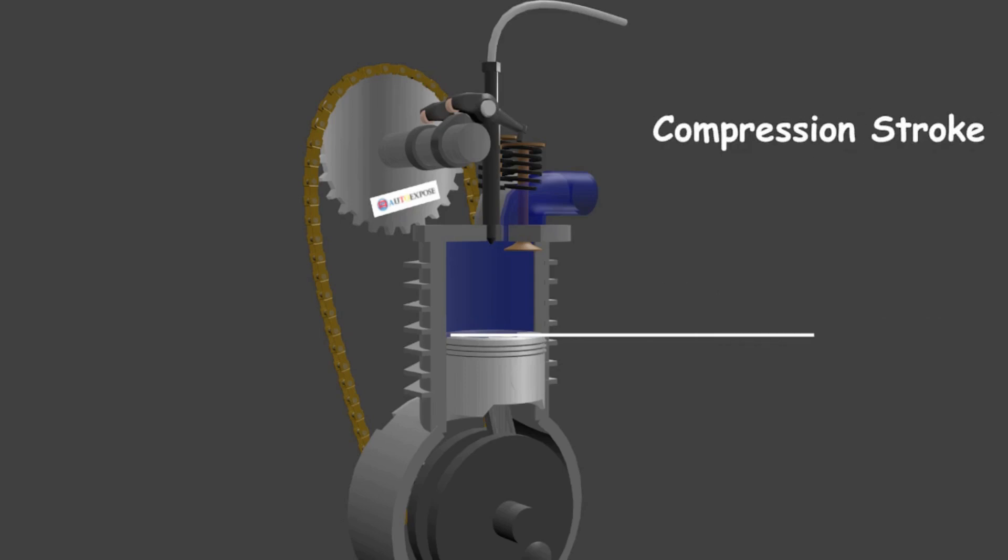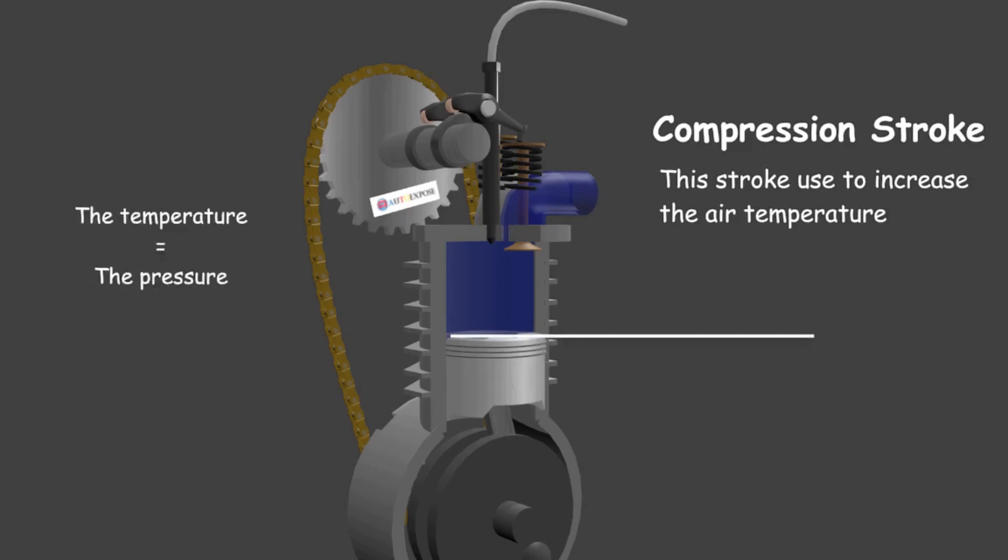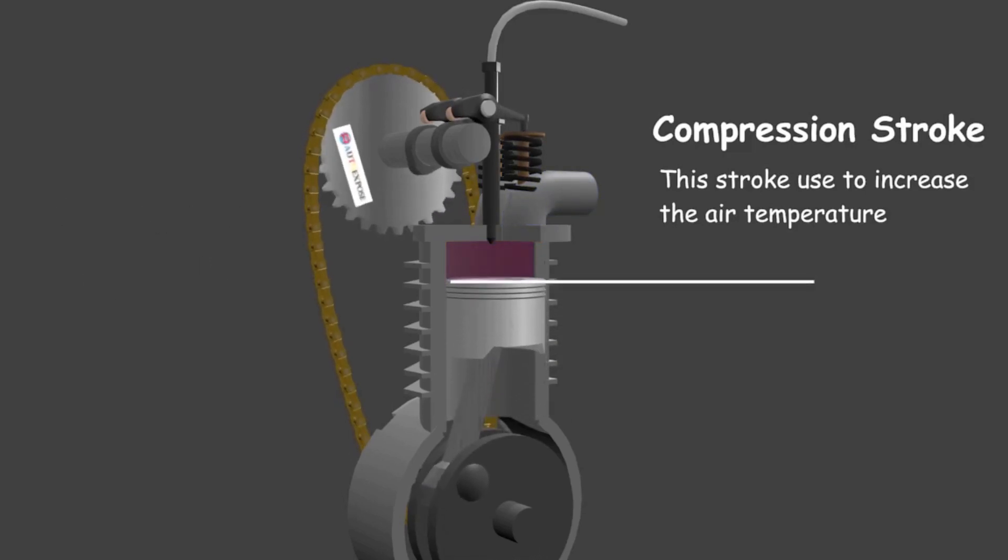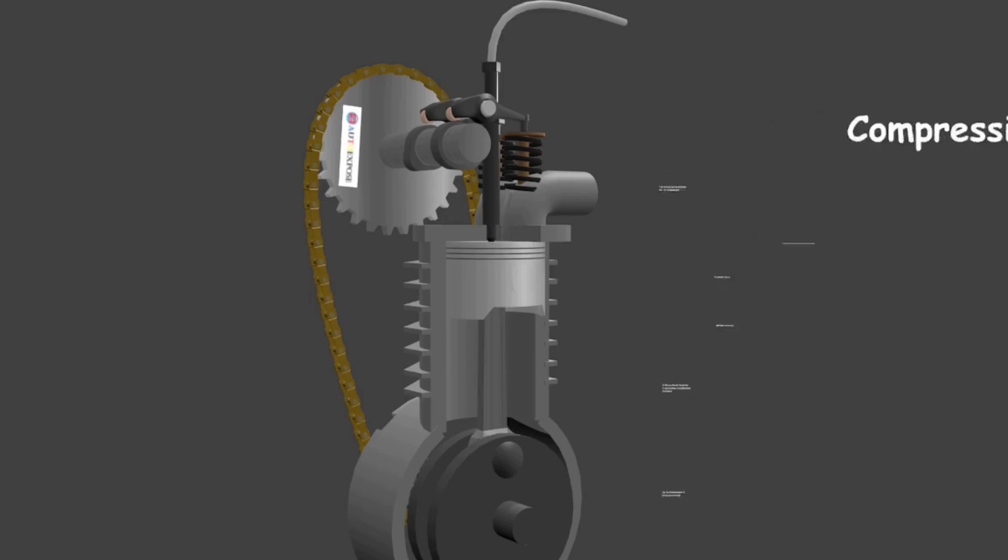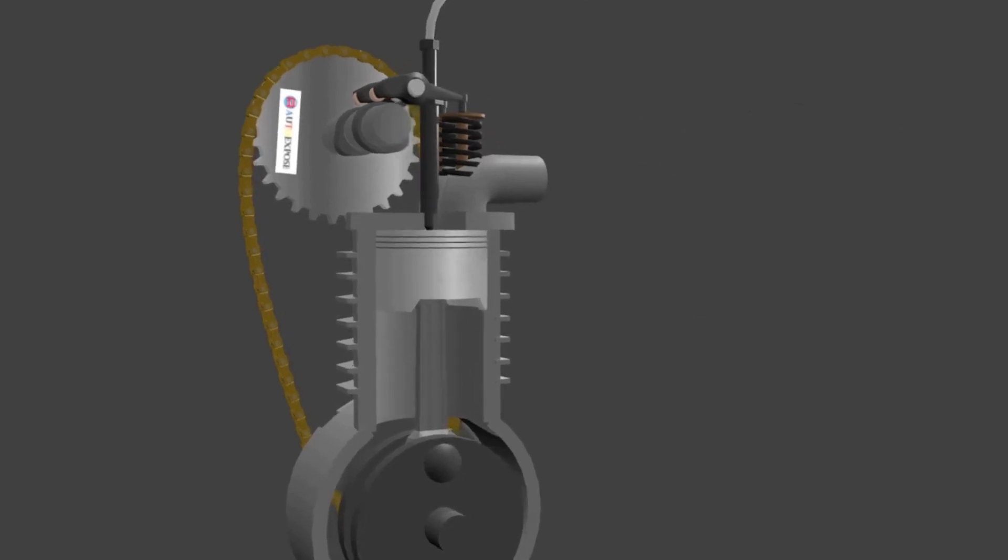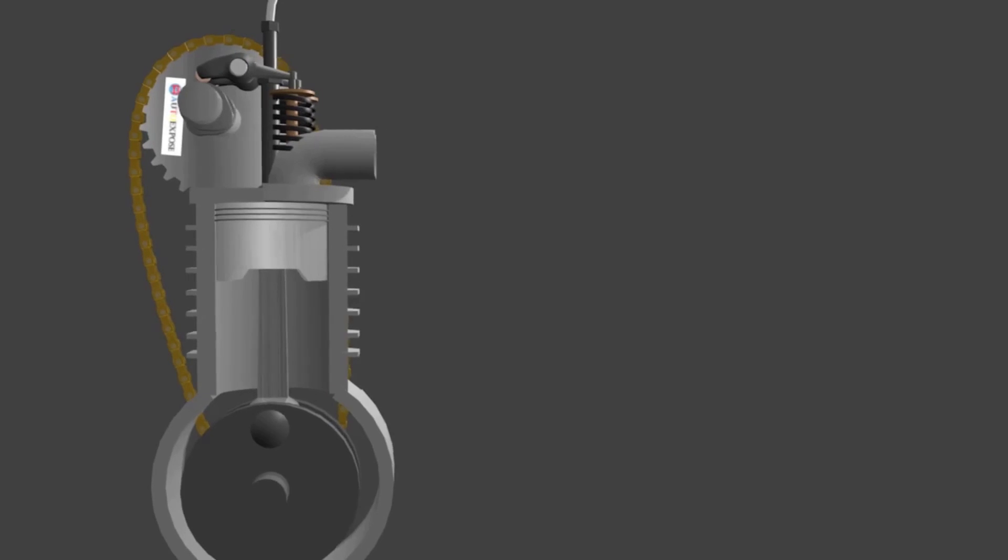The second is the compression stroke. In this step, the air temperature is increased. To raise the air temperature, we only need to increase the pressure, because the air temperature is directly proportional to its pressure. To increase the pressure, the piston moves upward, so that the cylinder volume decreases and both valves are closed. This forces air into a narrow space, so that the pressure and temperature rise.